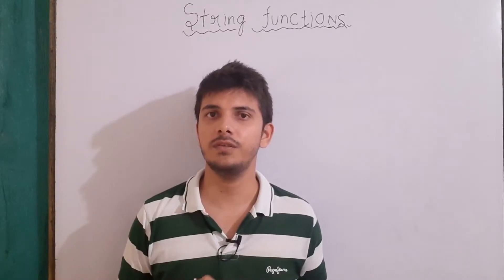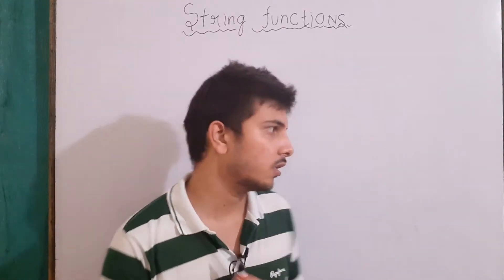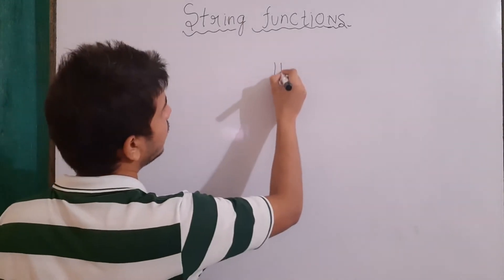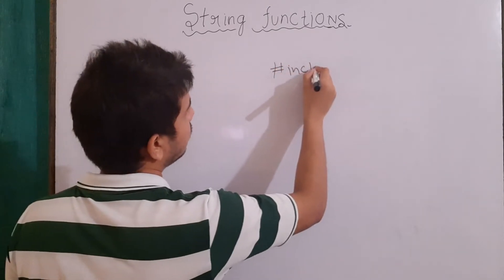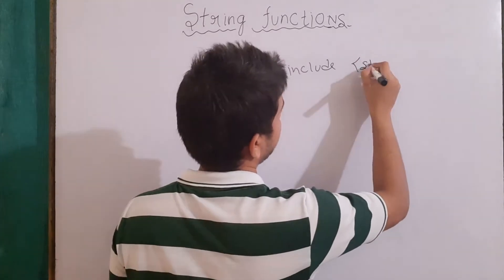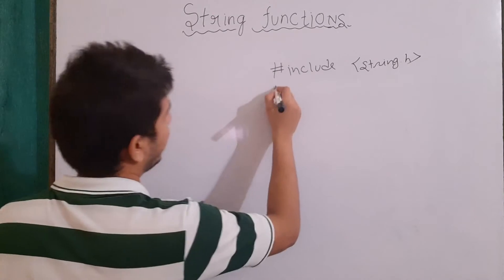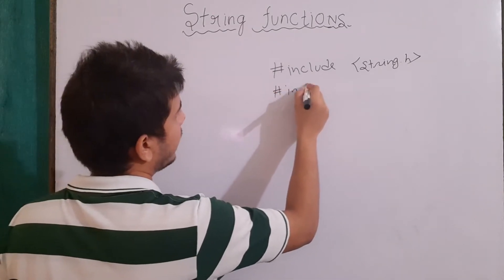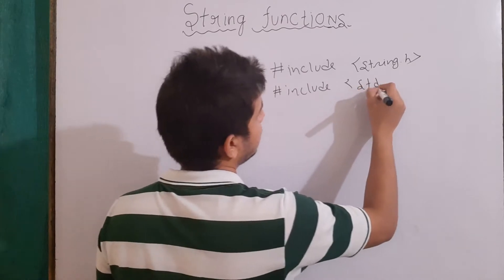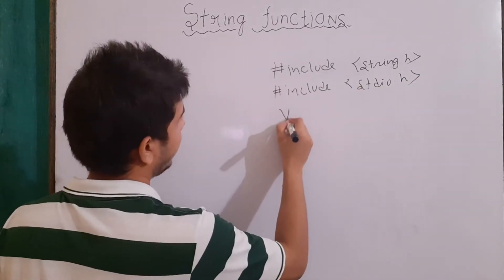All these functions which we are going to talk about are defined in the string.h header file. So for using any built-in string function we have to include our string.h header file. For that we will use the #include preprocessor directive and then string.h. Also our regular header file which is stdio.h for basic input/output operations, then void main.